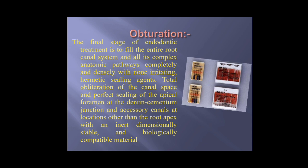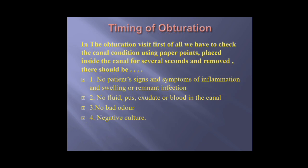Obturation seals against any leakage from the coronal area to the apical area and vice versa. There are several conditions that must be available in the obturation phase. In the obturation visit, we have to ask the patient about any signs and symptoms of inflammation — if there is any persistent pain, swelling, or inflammation in the apical area, obturation will be postponed.